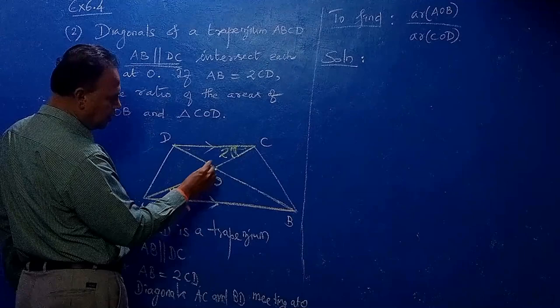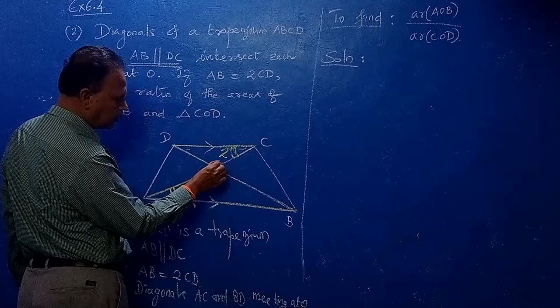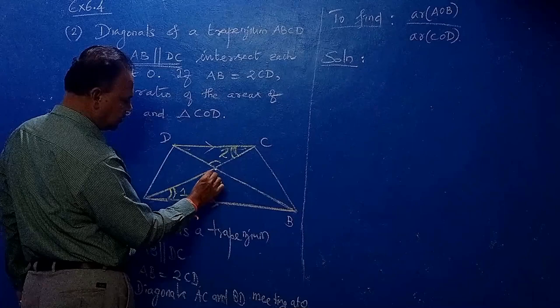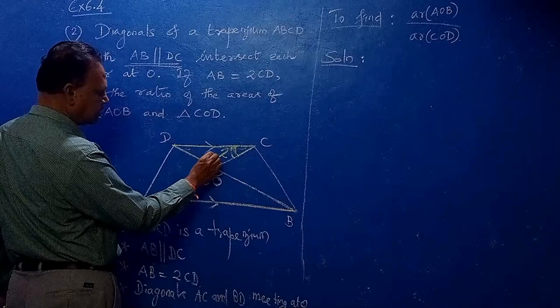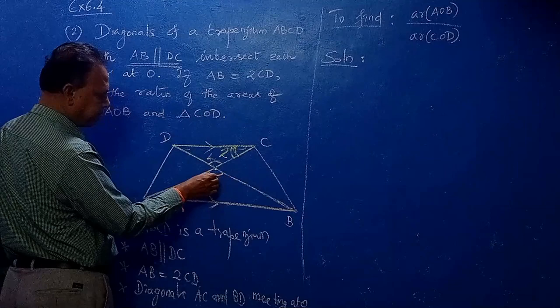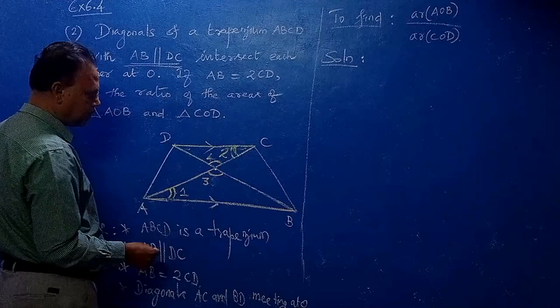Next, angle 3 equals angle 4 — vertically opposite angles. The point O is where the diagonals intersect, so those angles at O are vertically opposite. Mark angle 3 and angle 4 at point O.